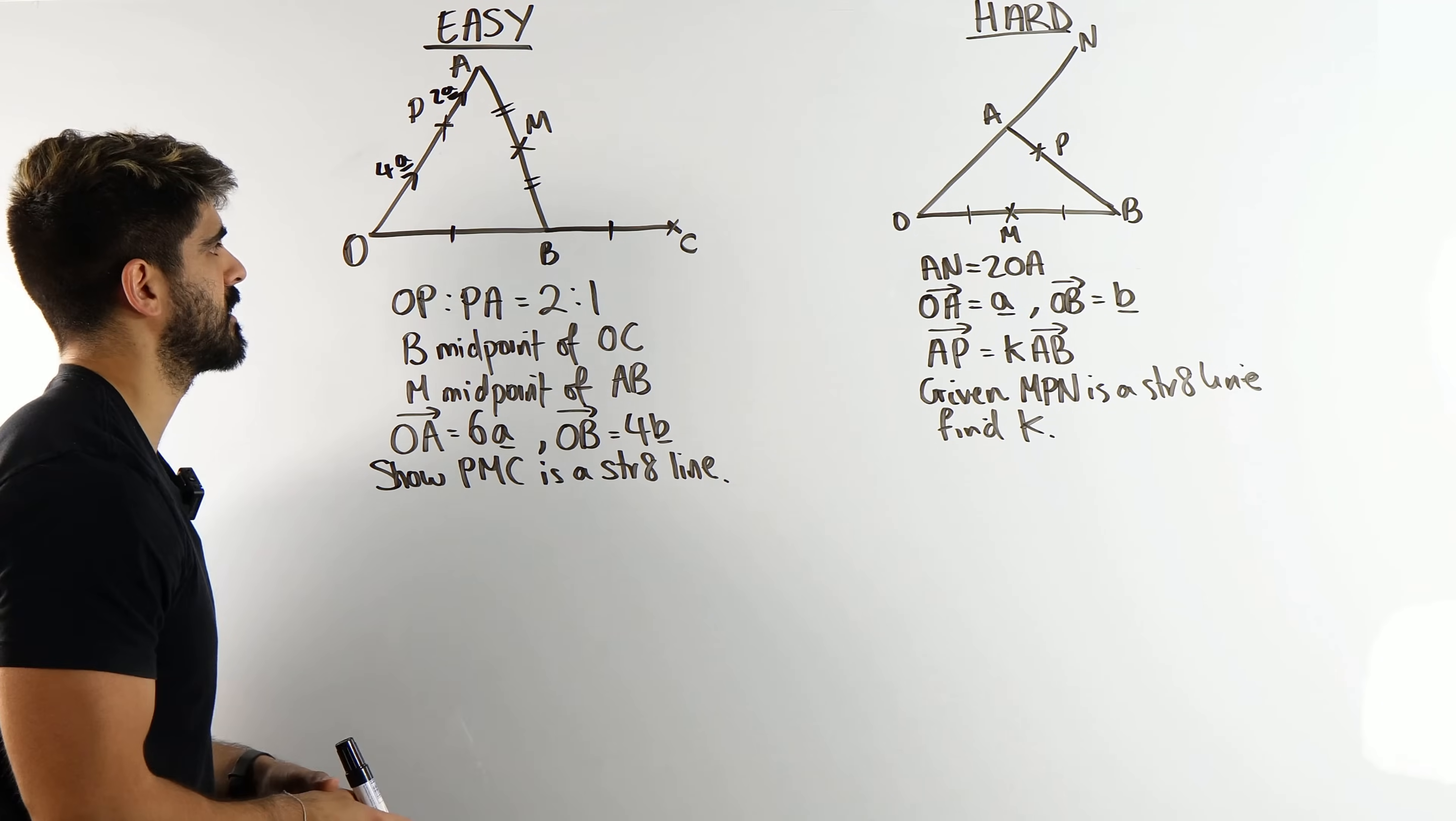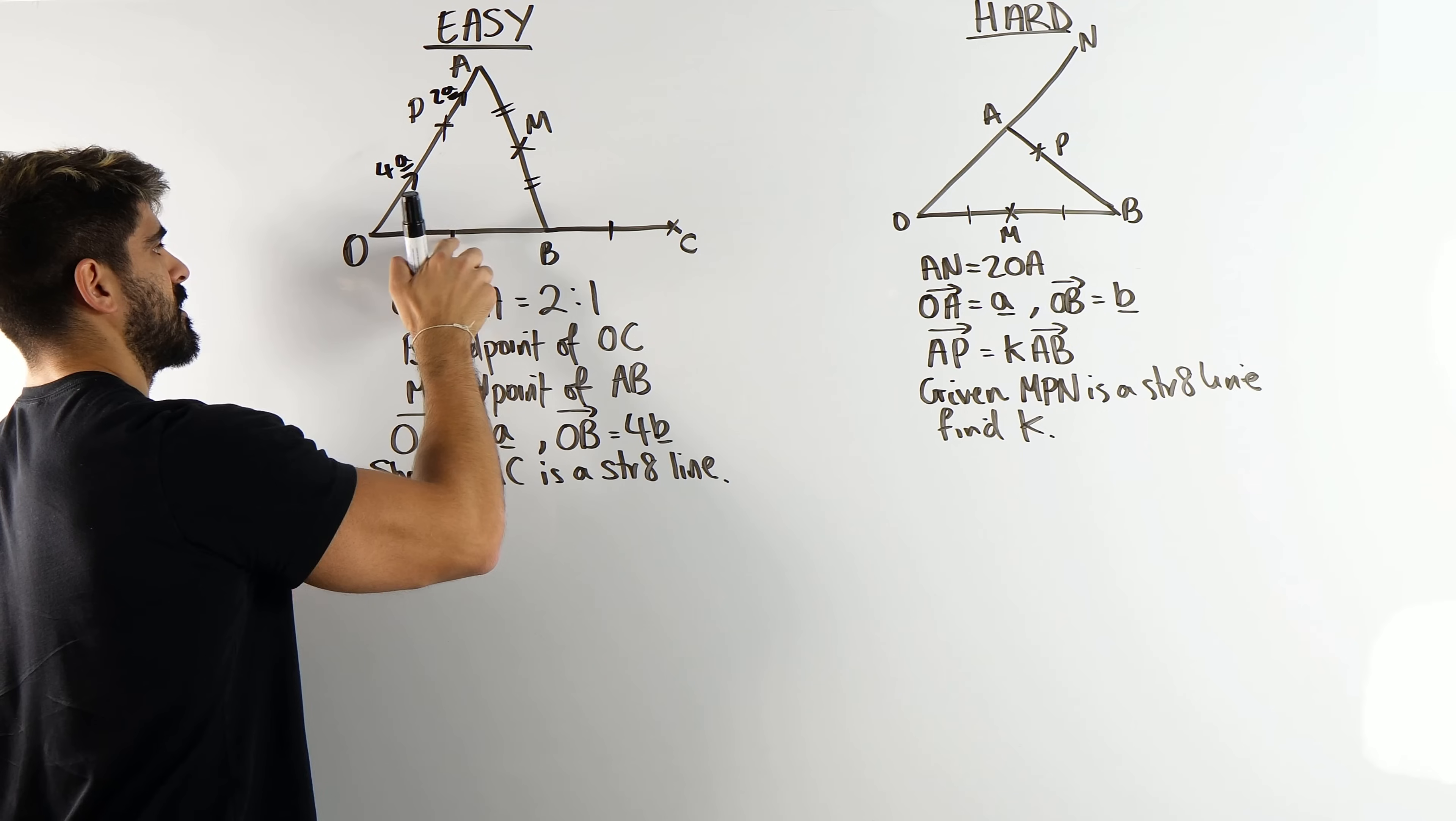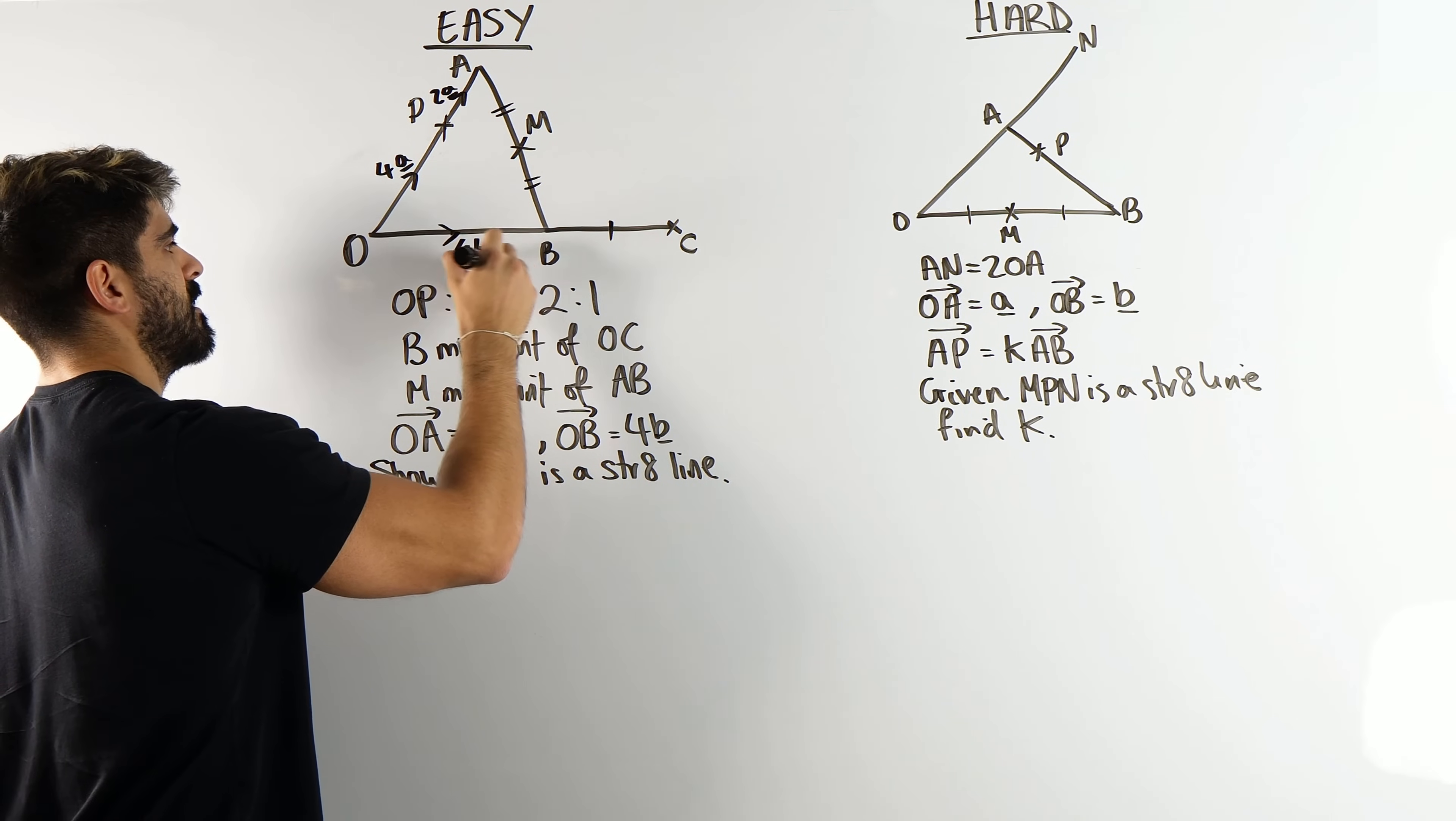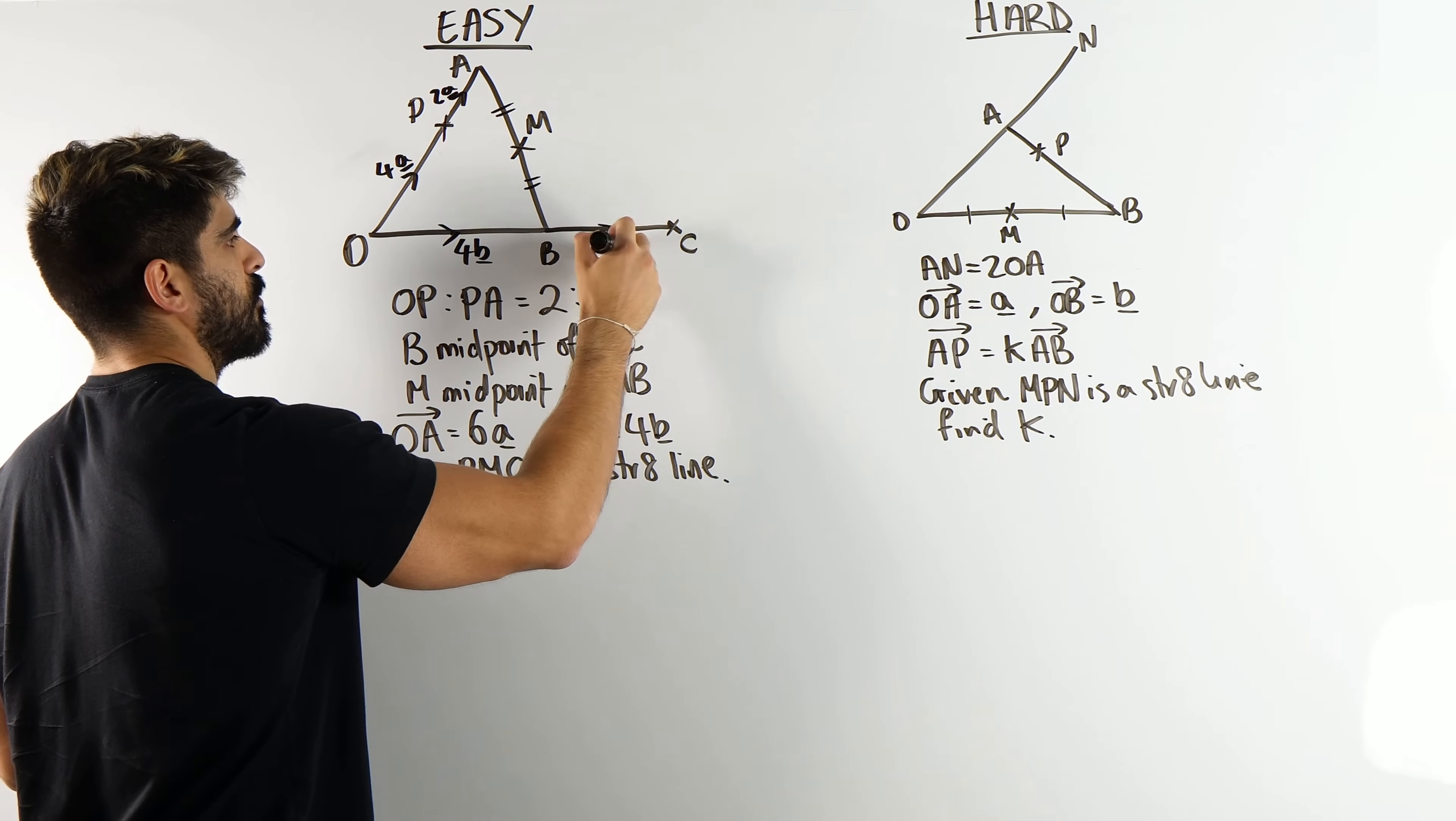Notice how I'm underlining the letters to indicate it's a vector. You don't have to do that, but it's good practice. O to B is 4B, and because B is the midpoint, it must mean that this is 4B as well.